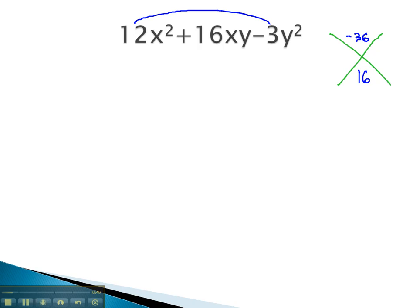So we'll try another pair of numbers. 36 is divisible by 2, so we might try 2 and 18.